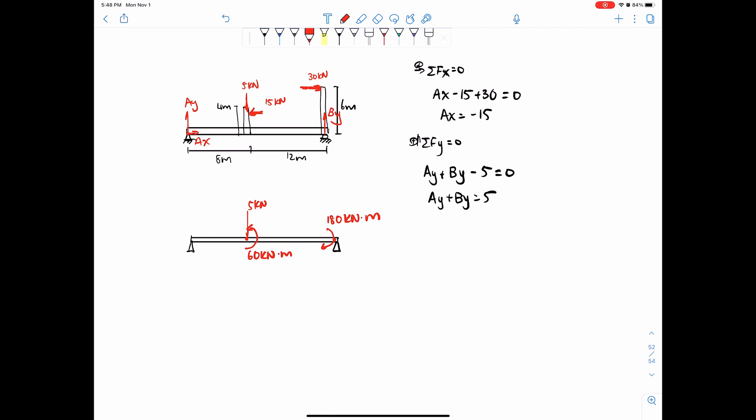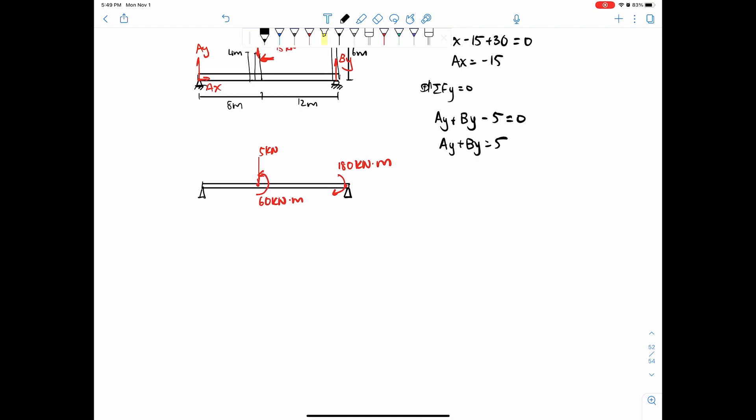And then this is 30 times 6, which equals 180 kilonewton meters. So these rotational moments are from these horizontal loads being transferred to these vertical segments, and then rotating the entire thing as a result. So basically, we can replace these two and just say that it's rotating this way. Once we have that, it should look pretty familiar now. Nothing too challenging.